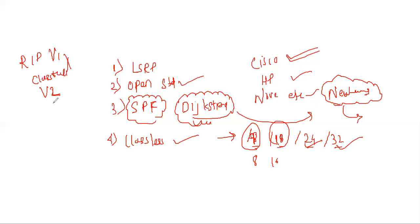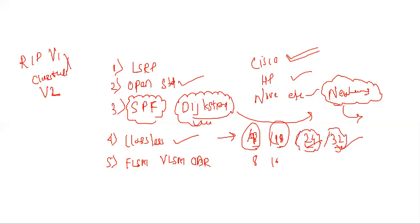RIP version 2 supports both classless and classful. Regarding subnetting, OSPF supports FLSM (Fixed Length Subnet Mask), VLSM (Variable Length Subnet Mask), CIDR (Classless Inter-Domain Routing) values, as well as manual summarization. Just like EIGRP supports auto summarization and manual summarization, OSPF also supports FLSM, VLSM, CIDR, and manual summarization.